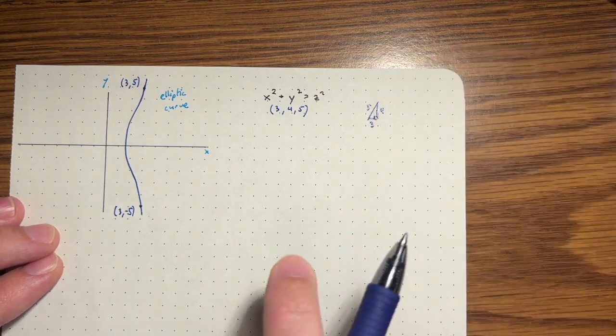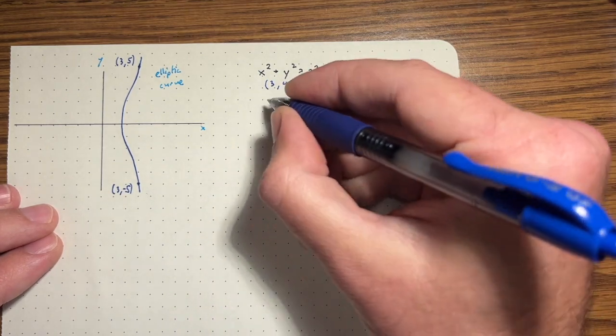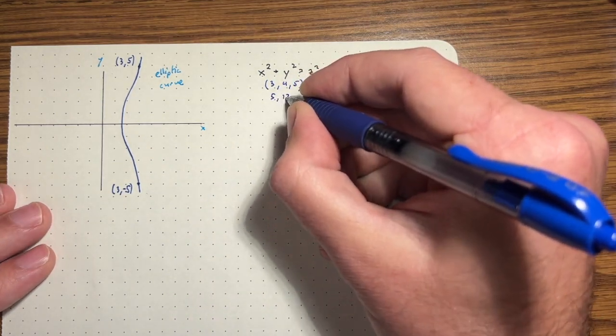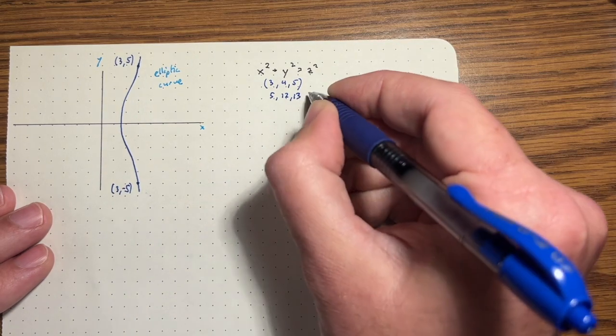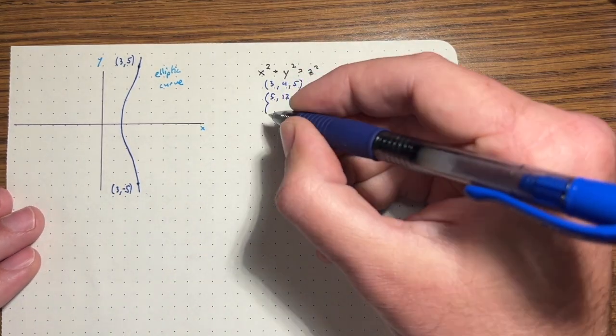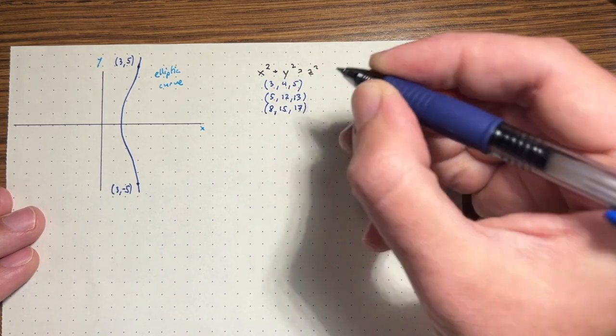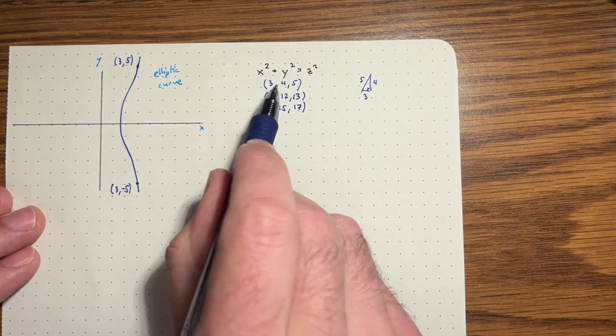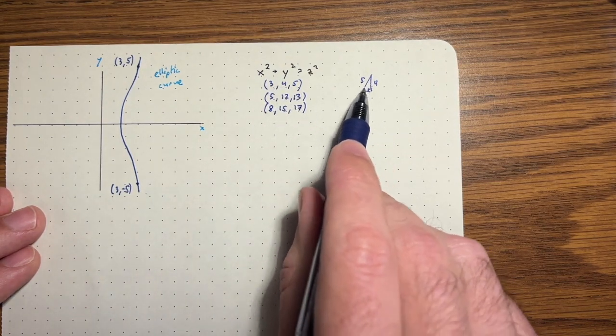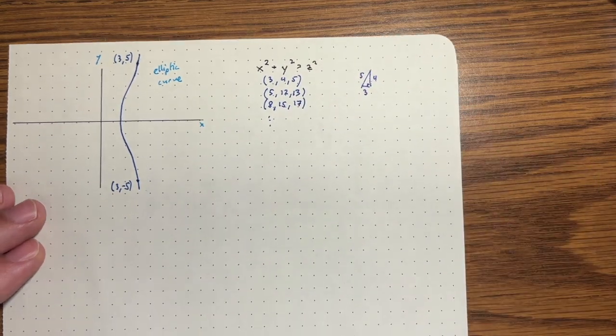There are many more. So five, 12, 13 is an example. Five squared plus 12 squared is 169, which is 13 squared. Eight, 15, 17. I could also say, I could just multiply one of these six, eight, 10, but that's not really interesting. It's just a larger version of this triangle. Yeah, turns out there are infinitely many of those.